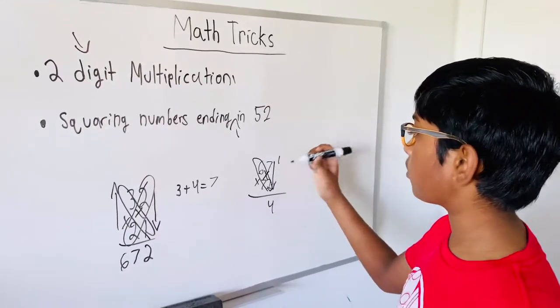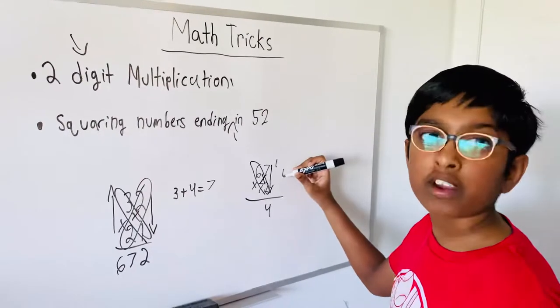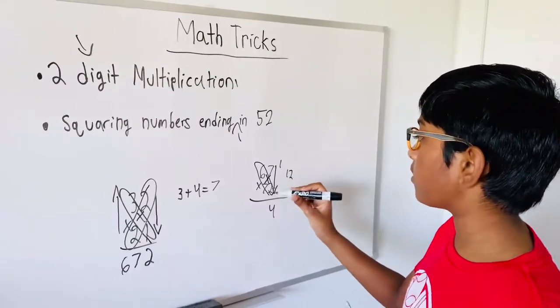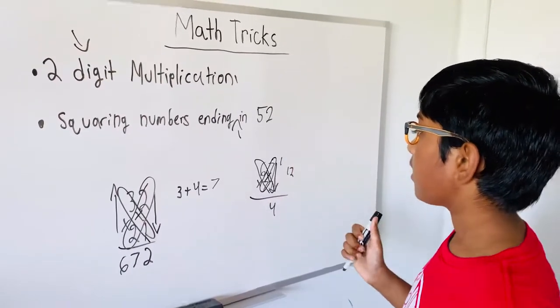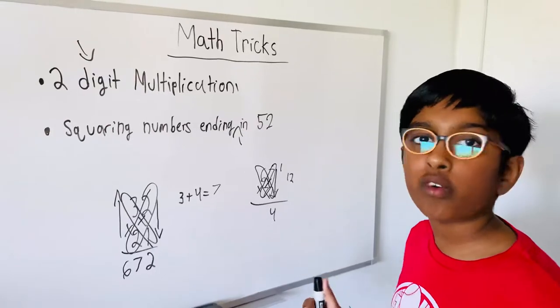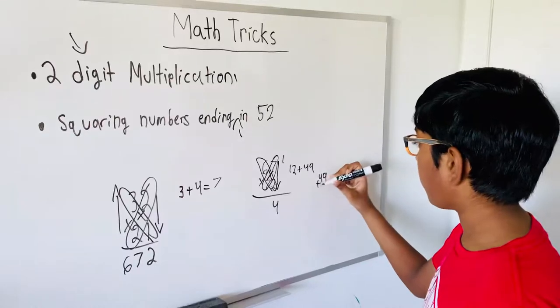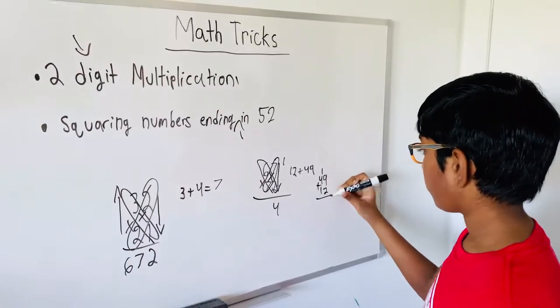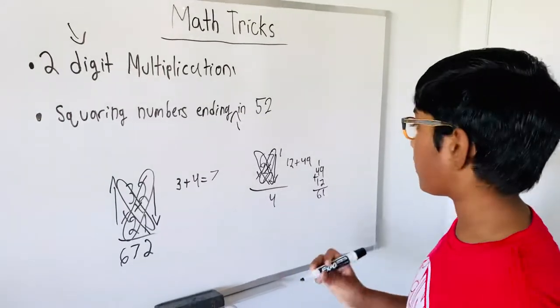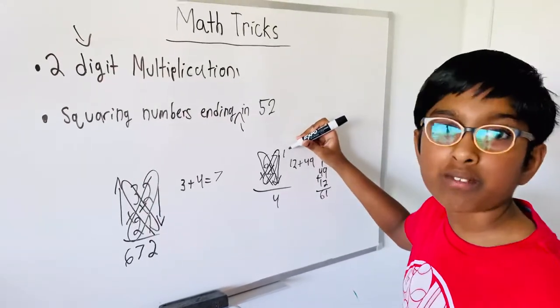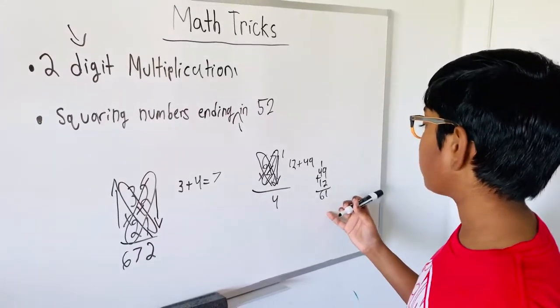Now we need to do six times two. Six times two is 12, so write 12 here. Then you need to do seven times seven. Seven times seven is 49, right? So 49 plus 12 is 61. Now remember that one you carried forward? You need to add it to the 61, then 61 becomes 62.